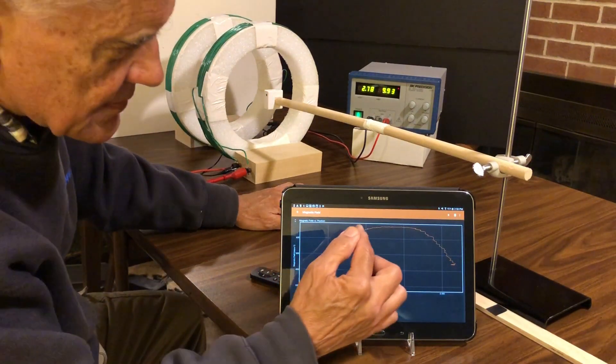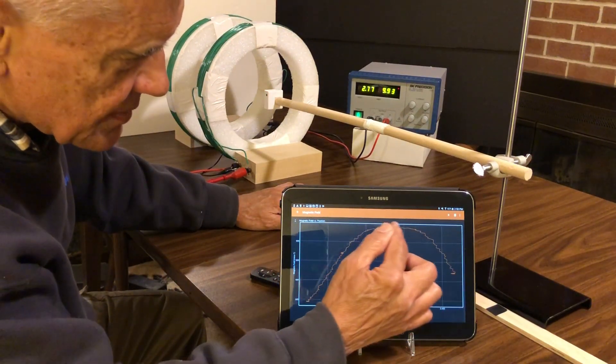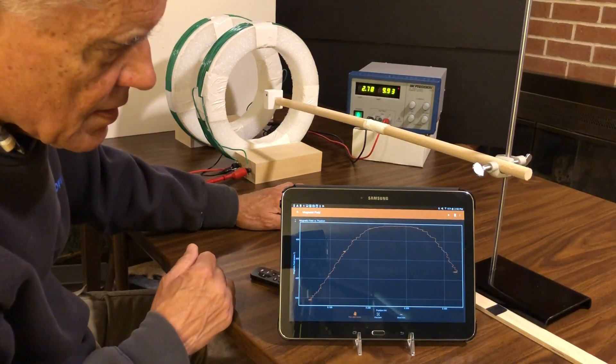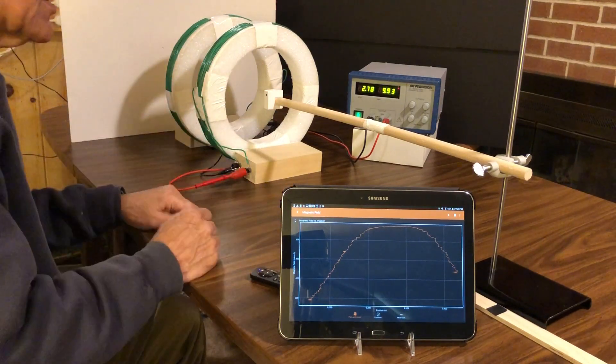You'll notice that the magnetic field strength is fairly steady over a range which is between the coils itself and that's the important thing about this particular configuration.